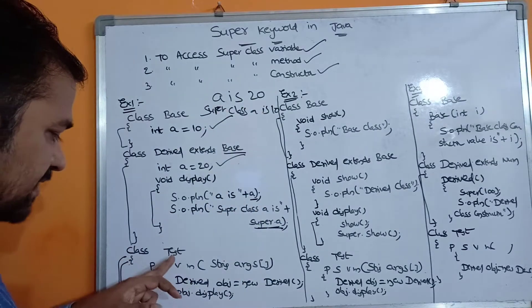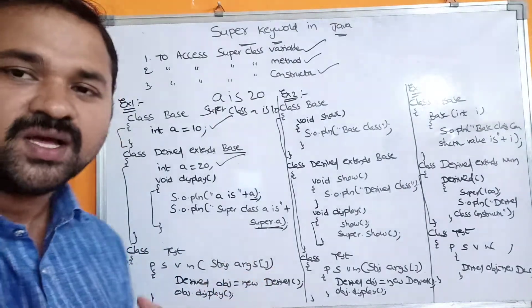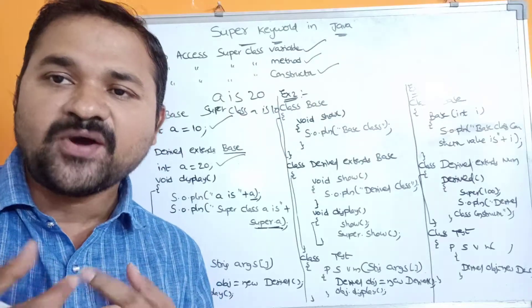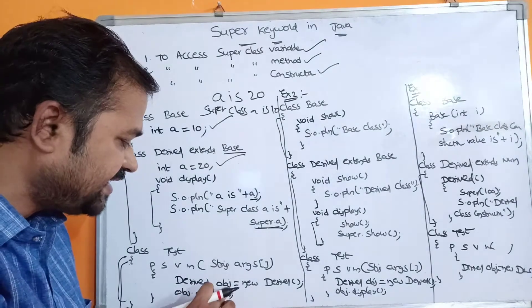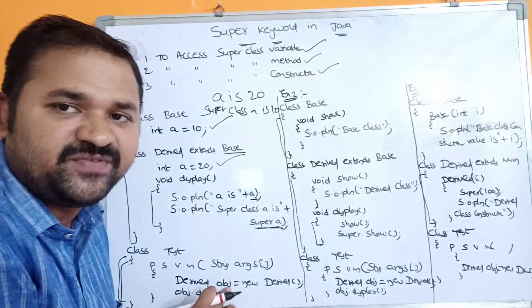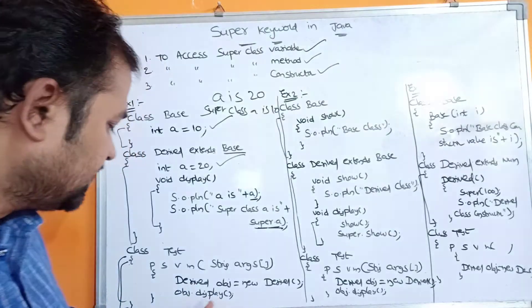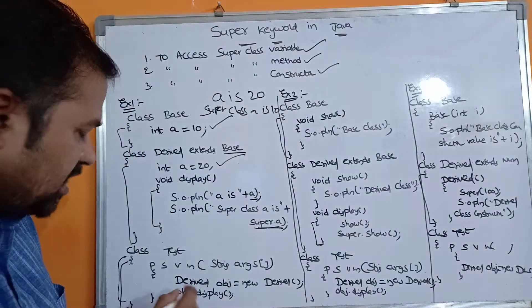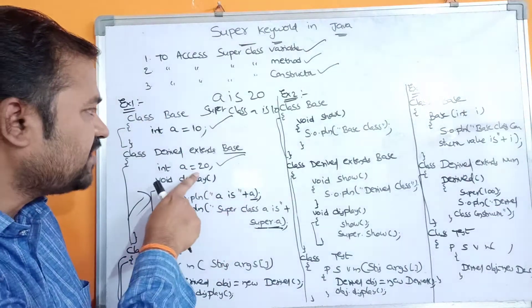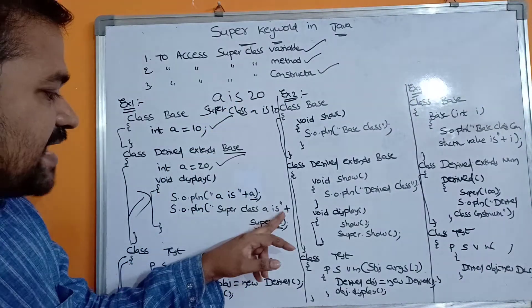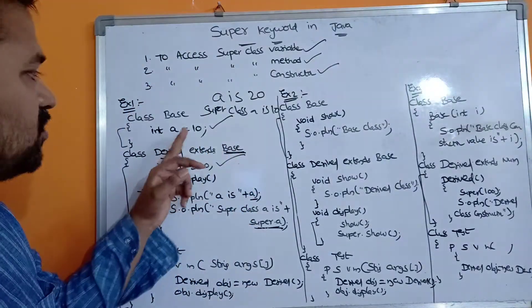This is the main method, present in a class called test. So: class test, public static void main(String[] args). While implementing inheritance we always create an object for the derived class: derived obj = new derived(). Whenever an object is created, memory is allocated to the members of the derived class. Then obj.display() is called. In the subclass a is 20, so "a is 20" is printed. The super class is base, where a is 10, so "super class a is 10" is also printed.